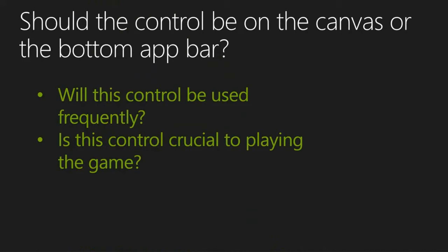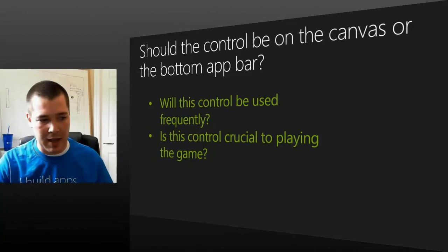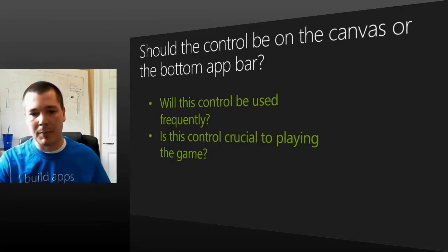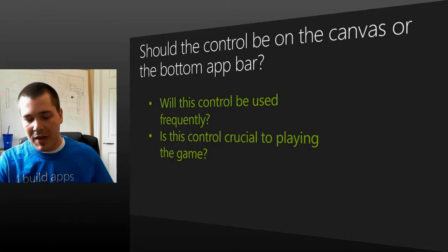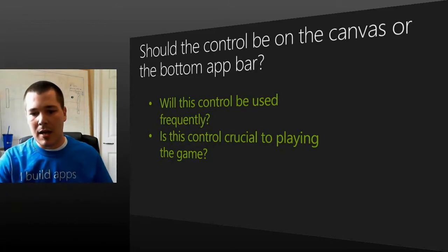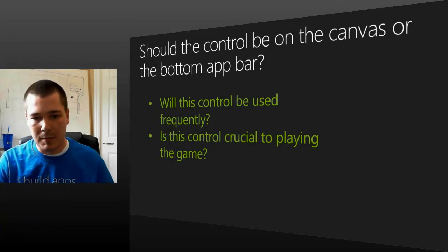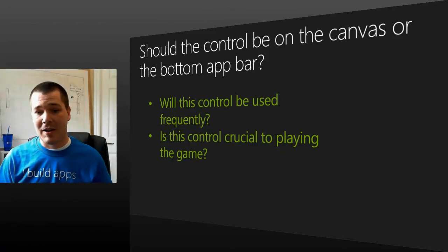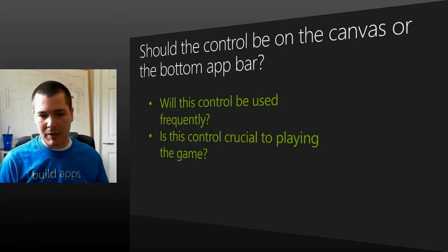When thinking about the app bar, ask yourself two questions: will this control be used frequently, and is this control crucial to gameplay? If you answer yes to either, it may be a good choice to put that control on the canvas. This ensures users won't become frustrated constantly going to the app bar for something used over and over again. The app bar should be for things that are very infrequent and not necessary to continue the game. Also, you can personalize the app control bars and add some personality or branding to them.